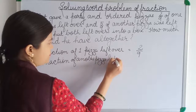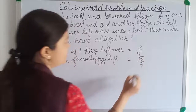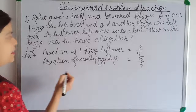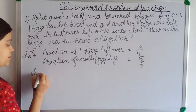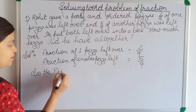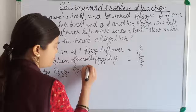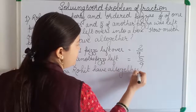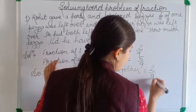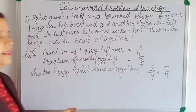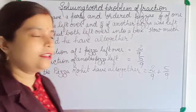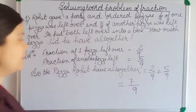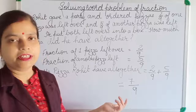The second pizza has five by nine left. So we have to add: two by nine plus five by nine. This is a like fraction, so we can add easily — we only add the numerators: 5 plus 2 equals 7. The answer is 7 by 9. Rohit has 7 by 9 pizza with him.